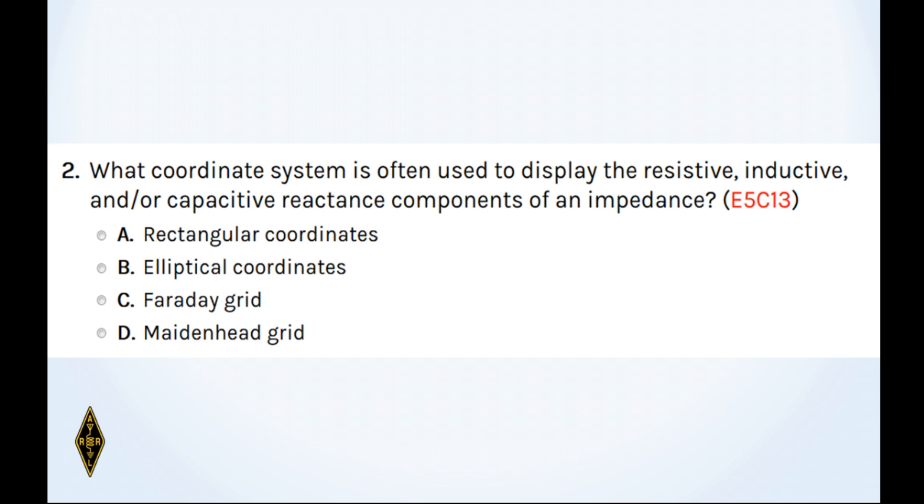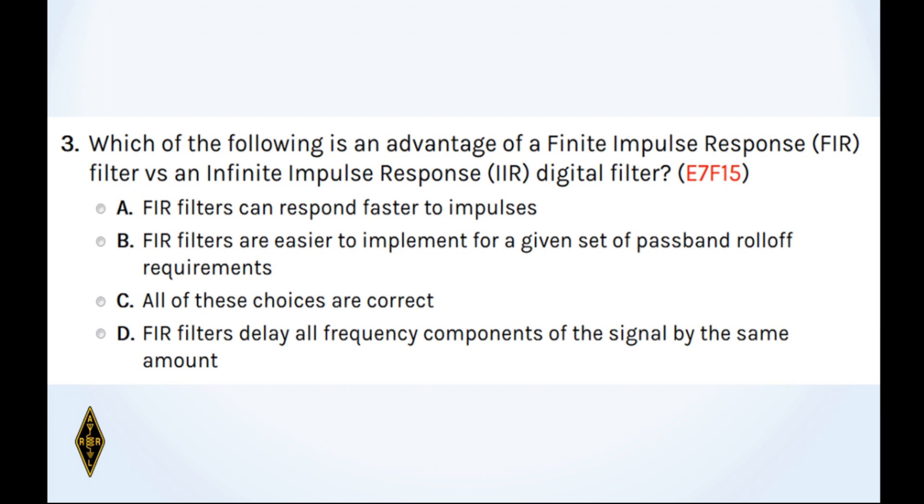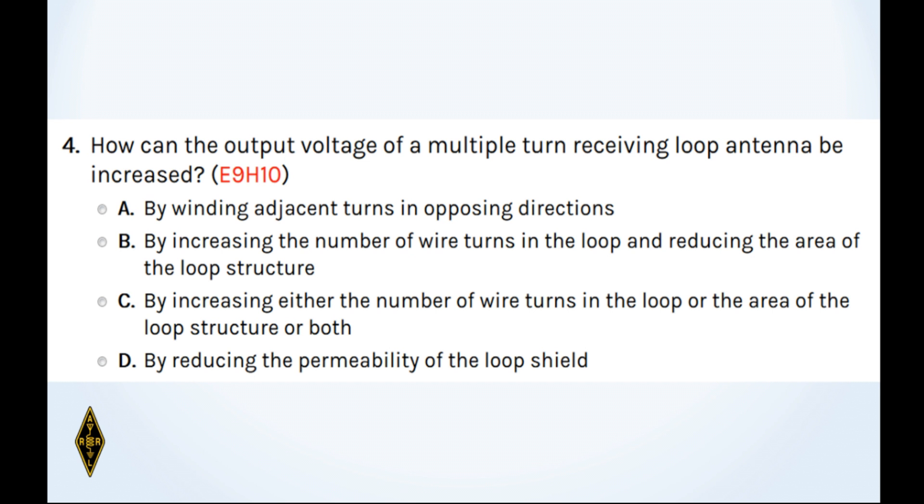Question number three. Which of the following is an advantage of a finite impulse response filter versus an infinite impulse response filter? And question number four. How can the output voltage of a multiple-turn receiving loop antenna be increased?